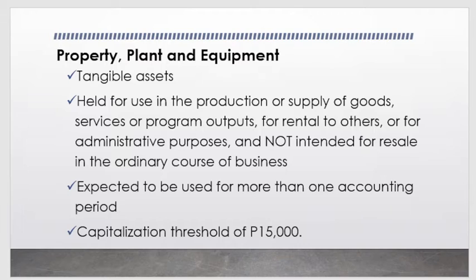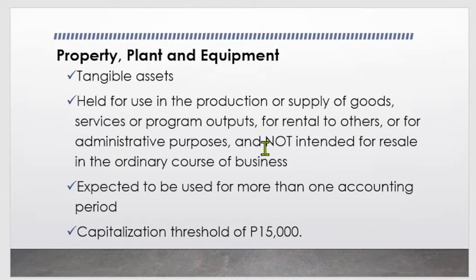Under financial accounting and reporting, we know what property, plant, and equipment is. PPE are tangible assets held for use in the production or supply of goods, services, or program outputs, for rental to others, or for administrative purposes — not intended for resale in the ordinary course of business. If intended for resale, it can be classified as inventory, or if used as an investment activity, as investment property.